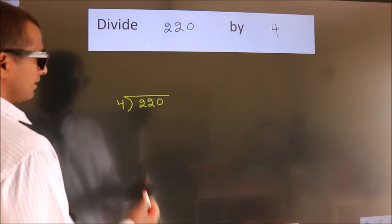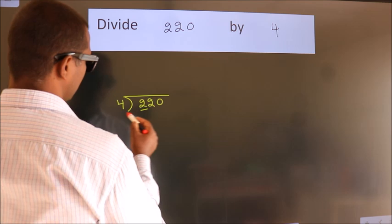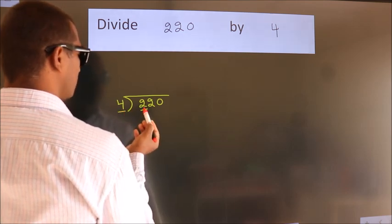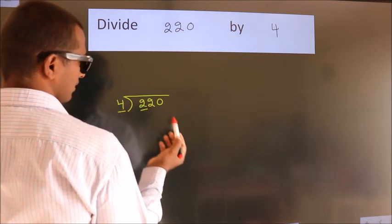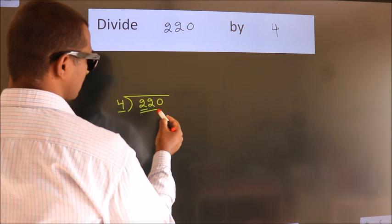Next, here we have 2, here 4. 2 is smaller than 4, so we should take 2 numbers: 22.